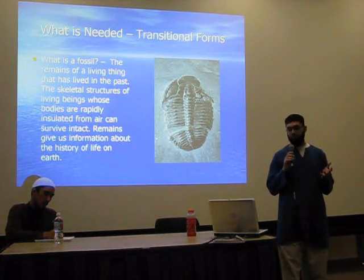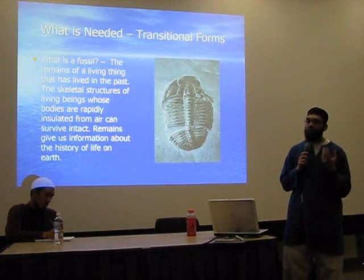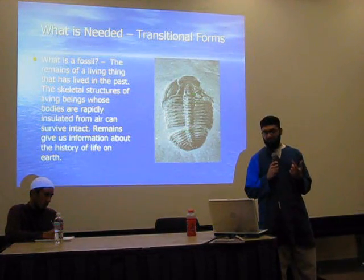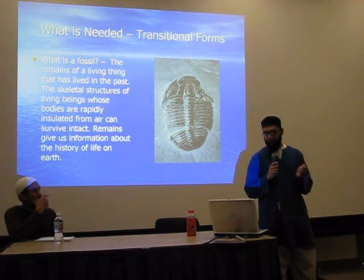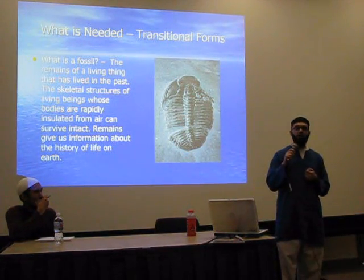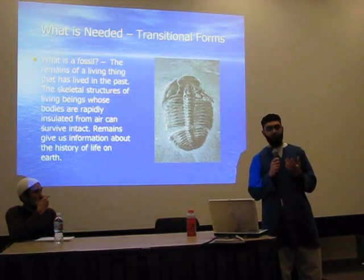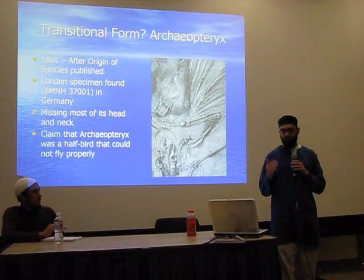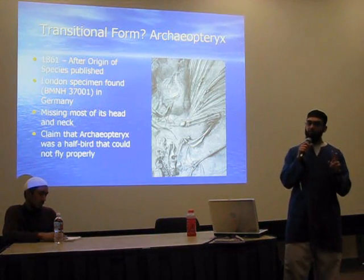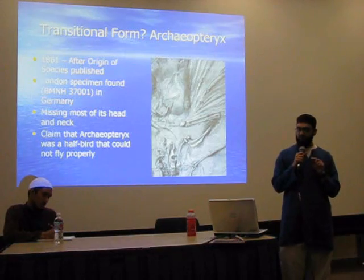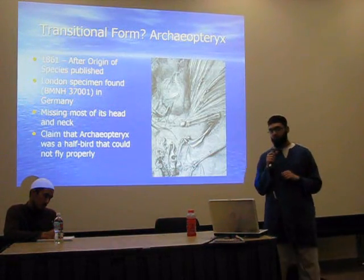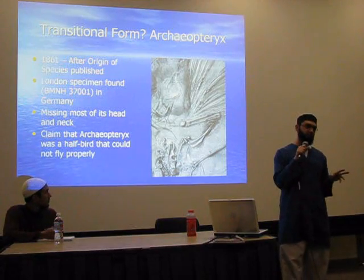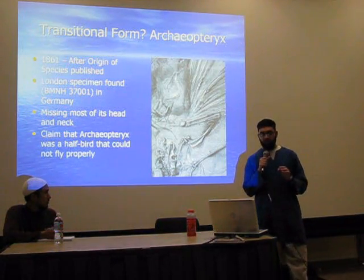So what is needed? We need to understand what a transitional form and a fossil are. A fossil is a remain of a living thing that lived in the past. The skeletal structures of living beings whose bodies are rapidly insulated from air will survive intact, and remains give us information about the history of life on earth. The first transitional form in question is Archaeopteryx. In 1861, two years after the Origin of Species was published, they found the London specimen — codenamed BMNH 37001 — in Germany. It's missing most of its head and neck, so it's an incomplete fossil. But they make the claim that Archaeopteryx was a half-bird.